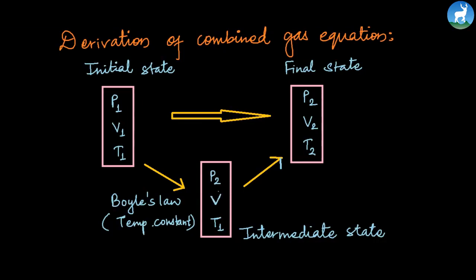Pressure will change from P1 to P2, and volume V1 will change to some intermediate volume V. Then we will apply Charles's law. In Charles's law, we keep pressure constant at P2, and the volume changes from V to V2 while temperature changes from T1 to T2.